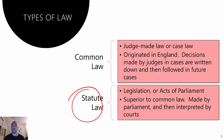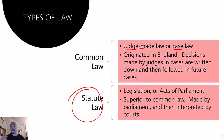We talked in the last video about the difference between common law and statute law. The two types of law are common law and statute law. Common law is judge-made law or case law — law that comes from cases and from judges — as opposed to acts of parliament, or laws that come from parliament. Common law originated in England. We adopted our system of law as we were colonies, six separate colonies of the British Empire.